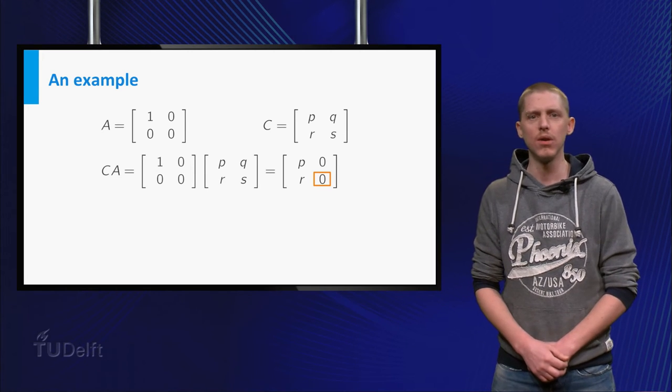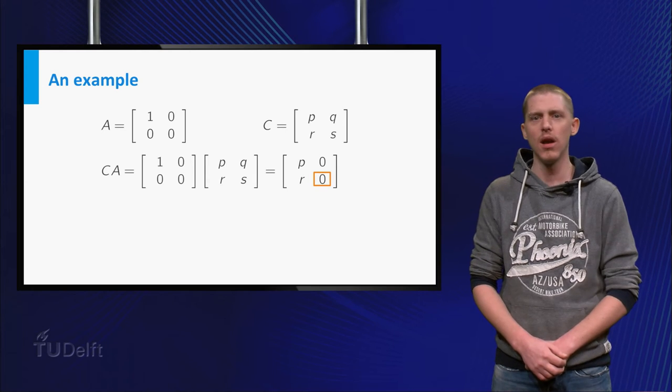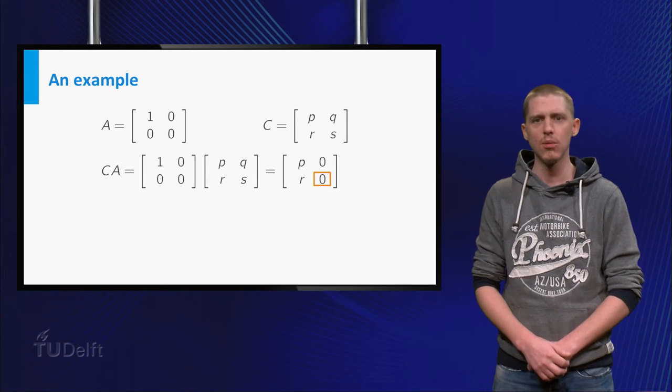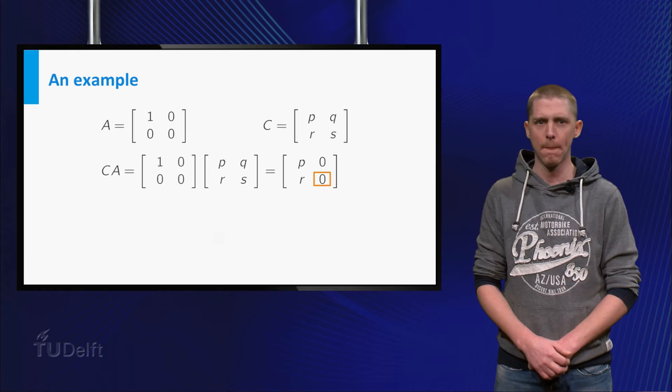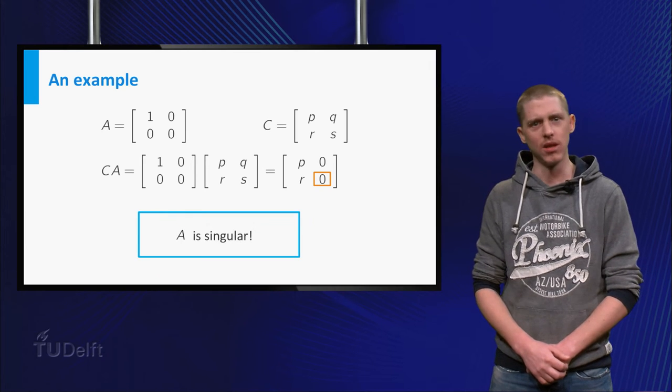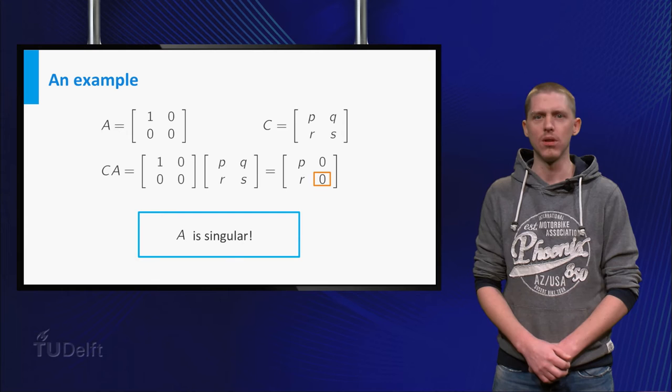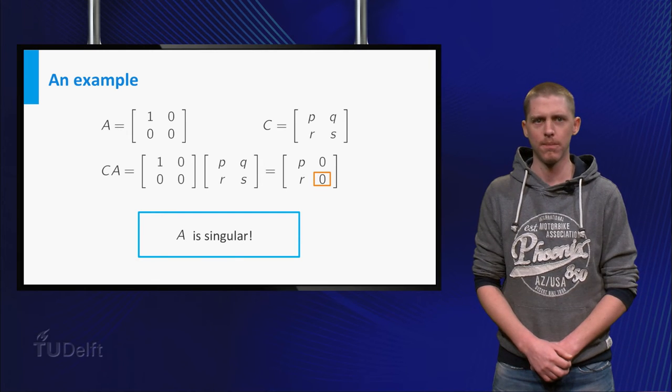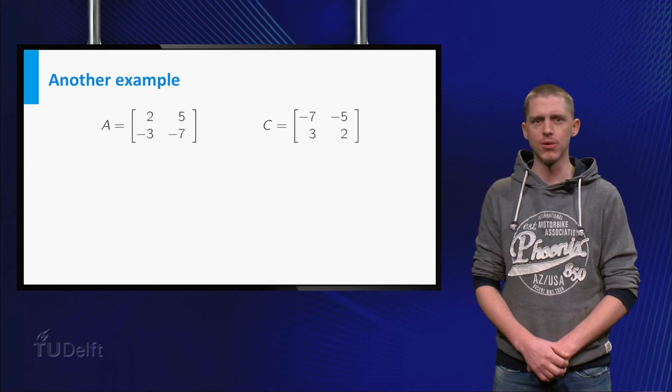This means that no values of P, Q, R and S are such that C times A equals I. So A is singular. So you now know that matrices with non-zeros can be singular. Let us try another example together.